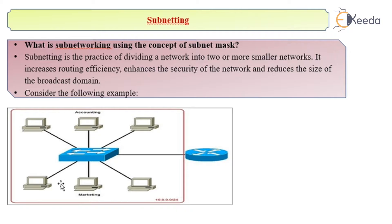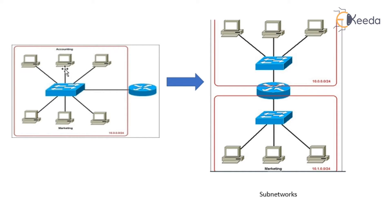For example, if this is one of my networks and I want to divide it into some subnetworks, then we use the concept of subnetworking. So when I divide these six machines into two smaller networks, we are virtually getting two networks here with this particular router element. So these two are called as the subnetworks.